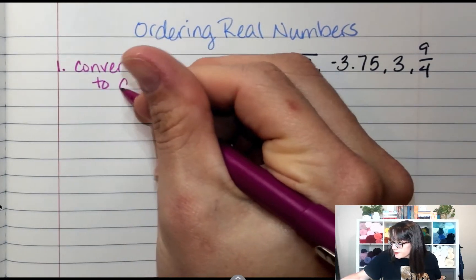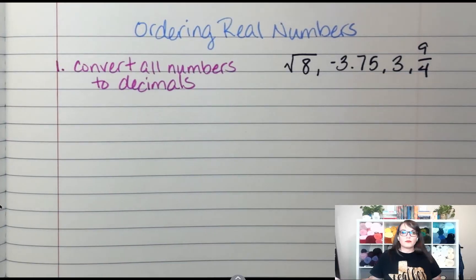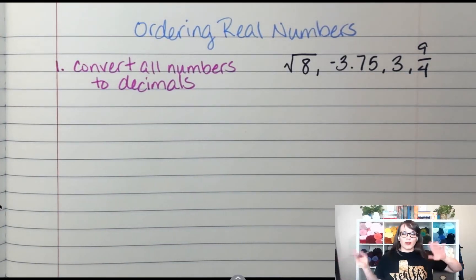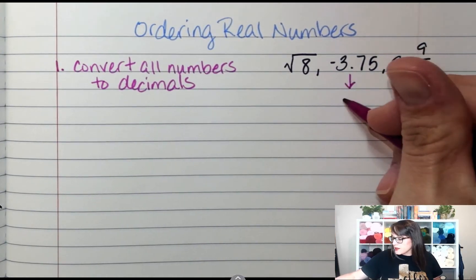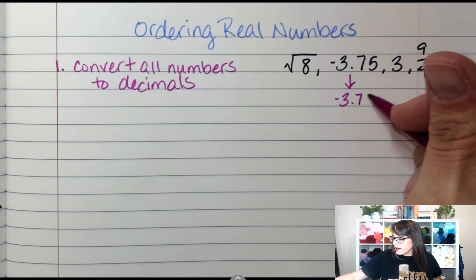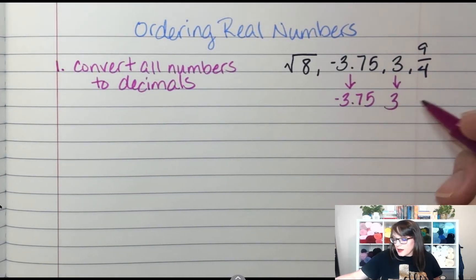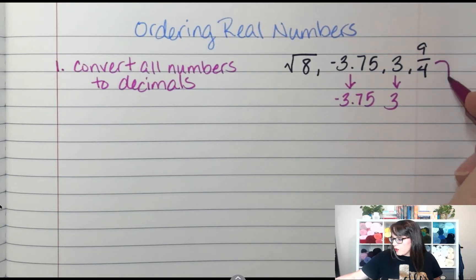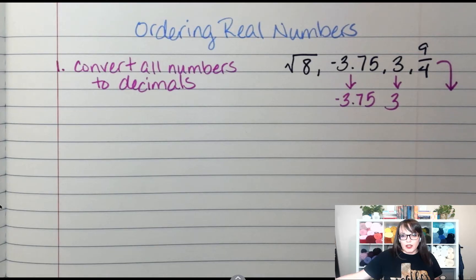For that, I'm going to reference a lot of lessons we've done so far. So first, I'm going to go with the easy ones. This one is already done, so that's 3.753. Well, that's just 3. But then 9 over 4—what is 9 over 4 as a decimal value? 2.25.